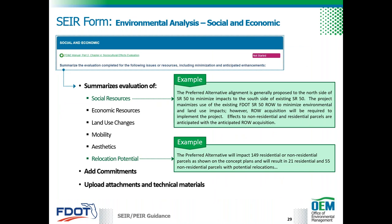The environmental analysis is completed using guidance in Part 2 of the PD&E manual. Part 2 includes separate chapters covering the social and economic, cultural, natural, and physical environmental resources. These chapters provide guidance on how to conduct the environmental and engineering analysis, how to assess project impacts, consult with resource agencies, and complete specific technical reports. Some issues are evaluated differently when there is no federal involvement. Most chapters covering environmental resources will have a corresponding training, with links available on the PD&E manual website.